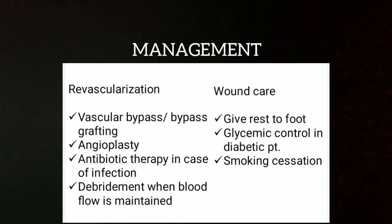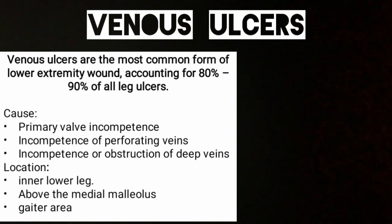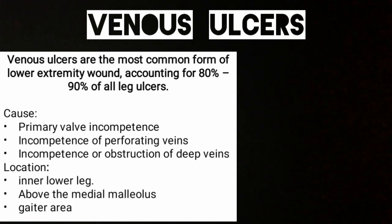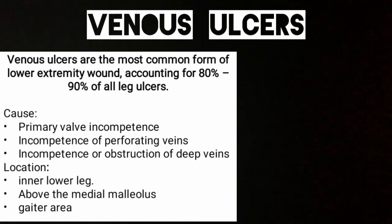Venous ulcers are the most common form of lower extremity wounds, accounting for 80 to 90 percent of all leg ulcers. The reasons for venous ulcers include primary valve incompetence — when the valve is damaged, blood does not flow in one direction, which causes blood pooling. It is also caused by incompetence of perforating veins and obstruction of deep veins. Varicose veins in old age can also contribute. All these reasons lead to blood pooling and pressure build-up in the area, which can cause ulcer formation on the skin.